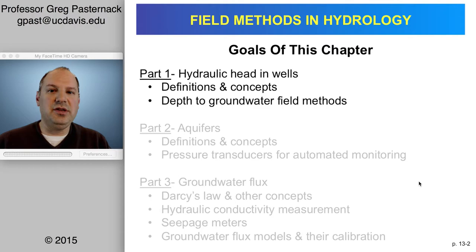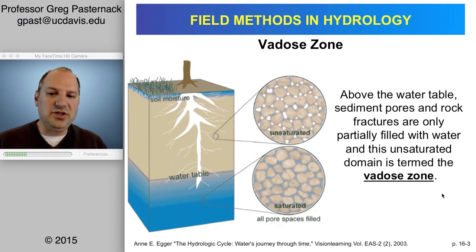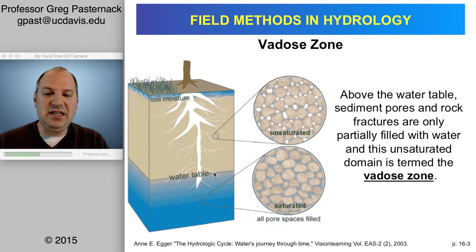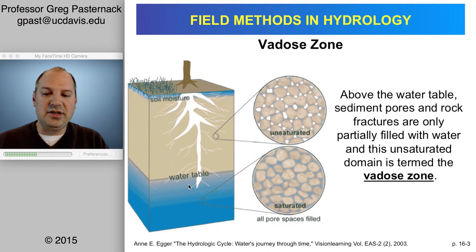The vadose zone is the area where the pores in the soil are unsaturated. There's still water present, which is why the water table isn't easily defined as dry versus wet. The water table is the zone below which the ground is saturated — that is the groundwater.